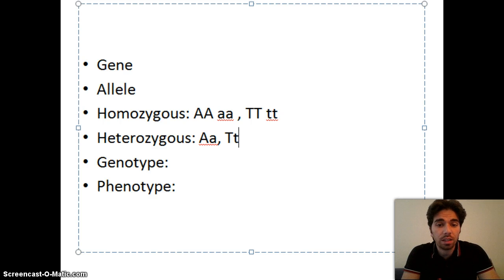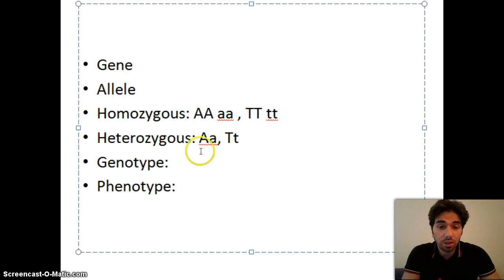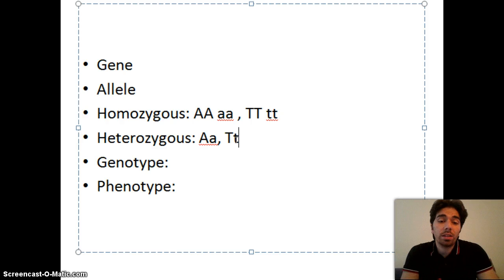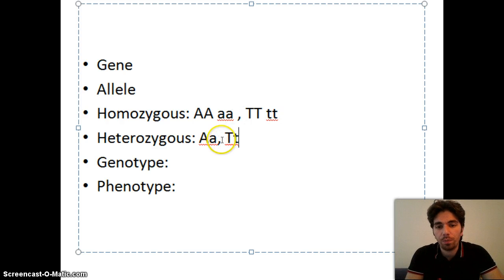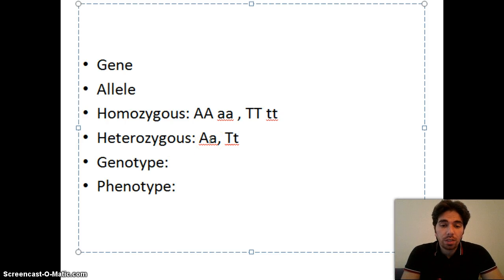If the two alleles are different — for example, big A small a, or in the plant example big T small t — then the organism is heterozygous. Heterozygous means the two alleles are not the same. In the heterozygous case, what appears on the outside: for the plants with big T and small t, the plant will be tall because the allele for tall is dominant over the allele for short.